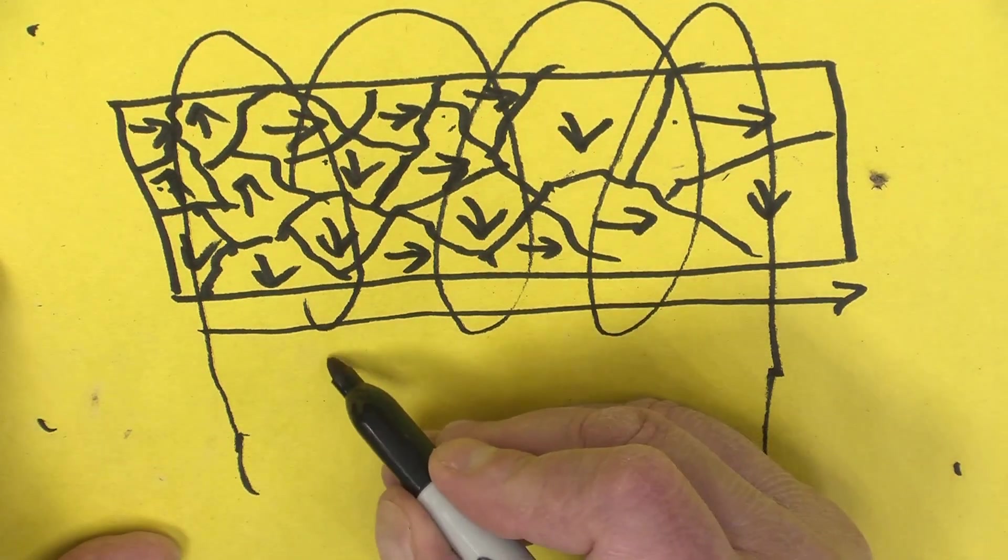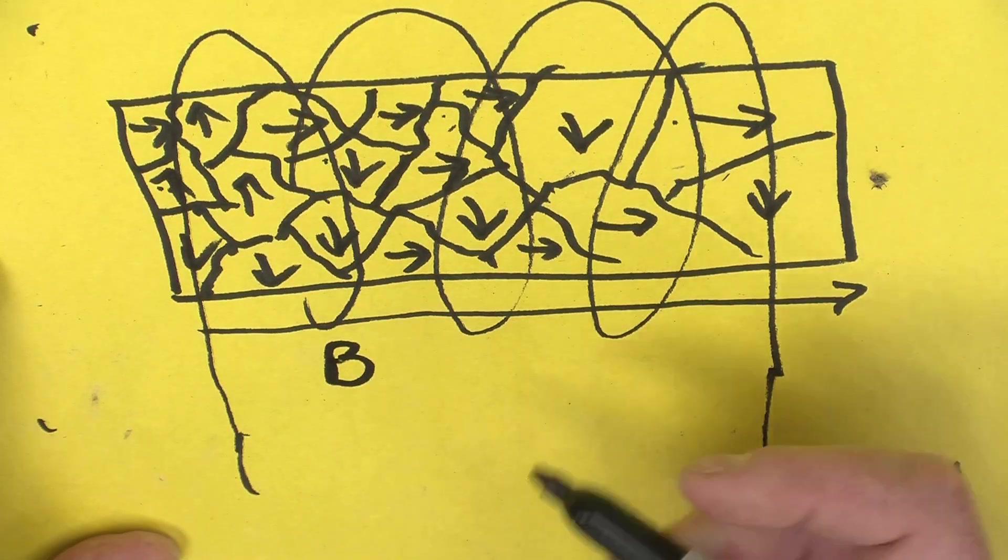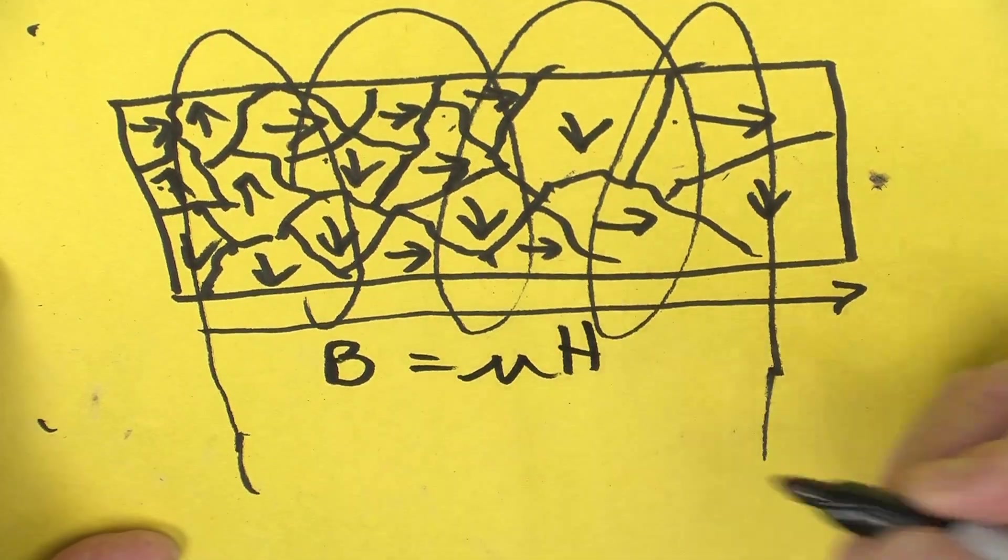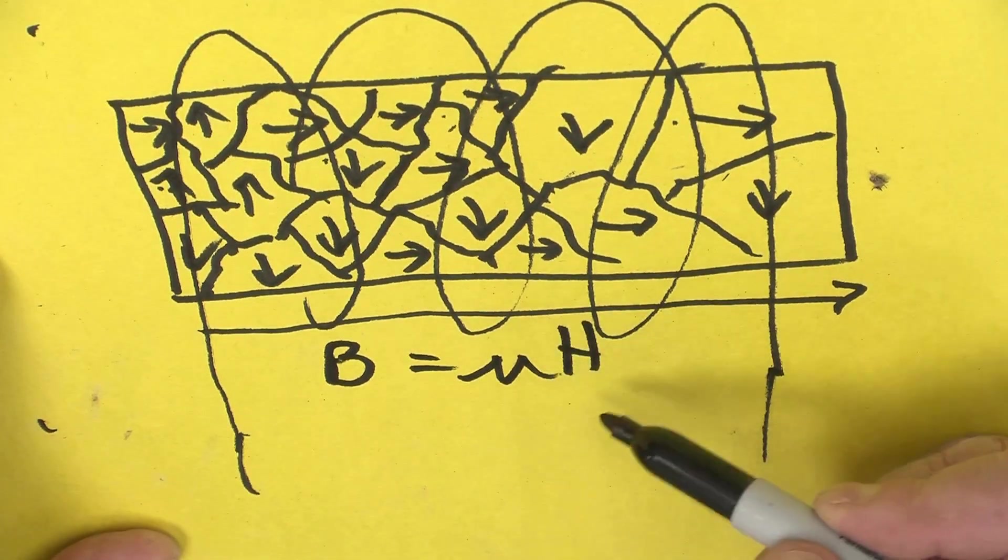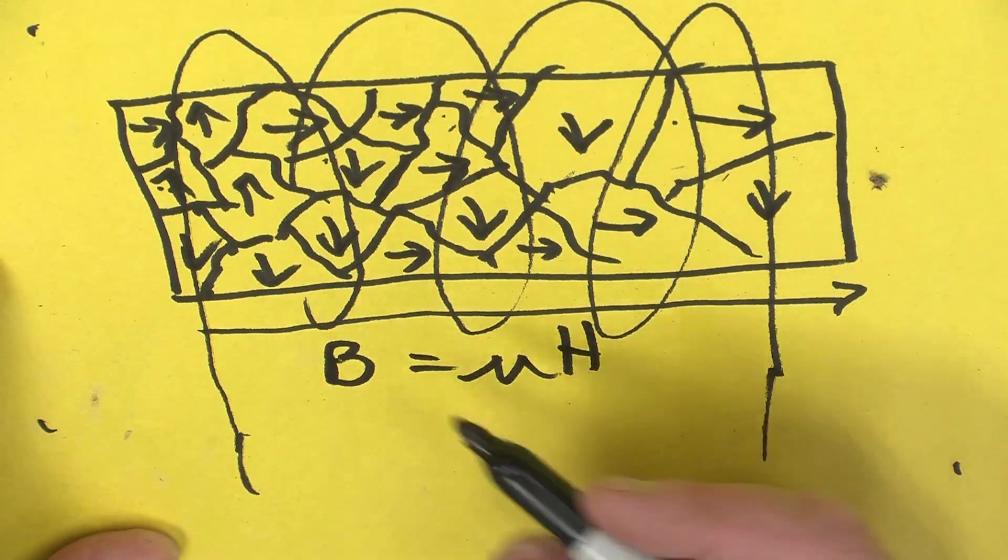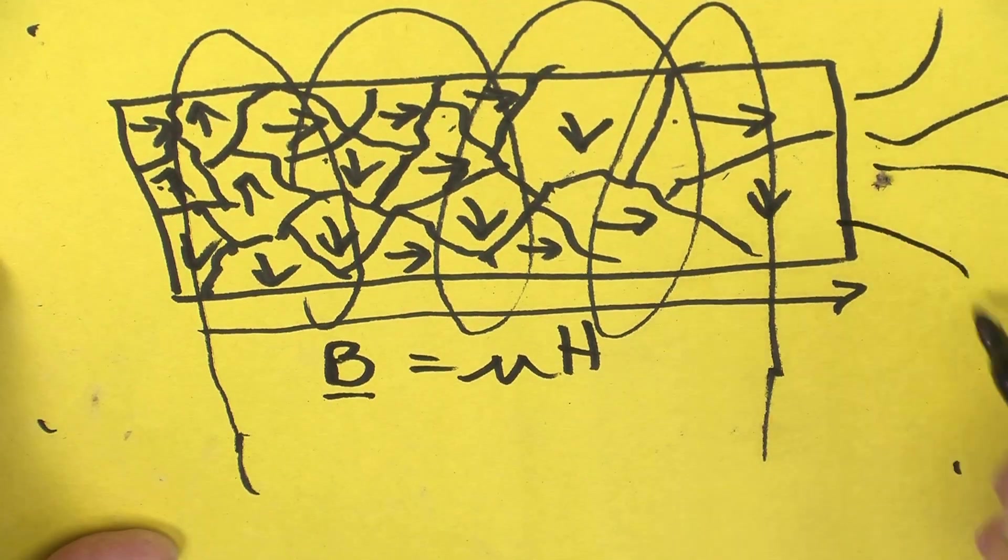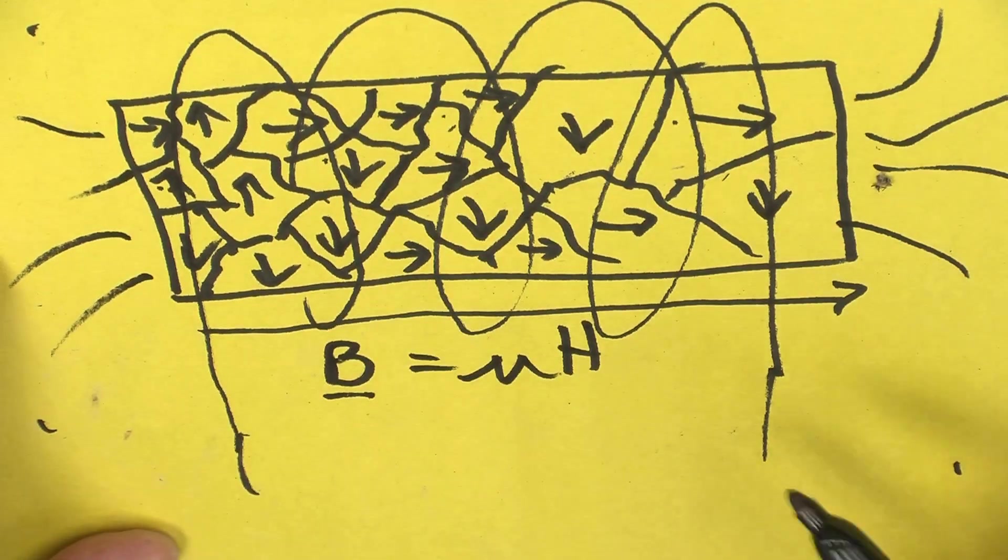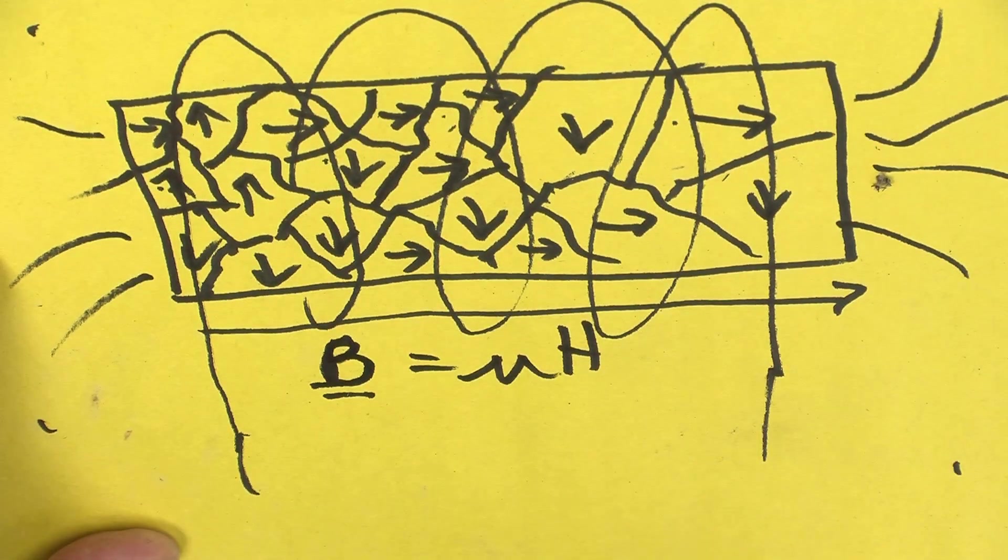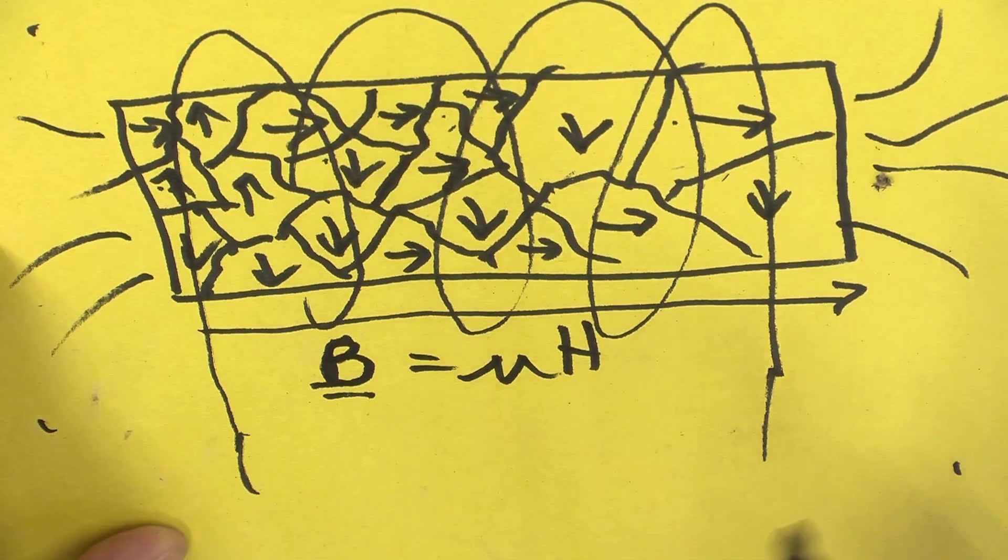And we actually have a way of expressing that, and that is, with this formula here, B, the field, or actually it's the flux density, equals mu times H. H is the magnetic force field, the field that is as a result of the current going through the loop. And B is the magnetic field that we normally associate coming out of the edges or the ends of the magnet, and that's what we really want to have be nice and big. And, again, we put a core in, and we get that amplification happening.